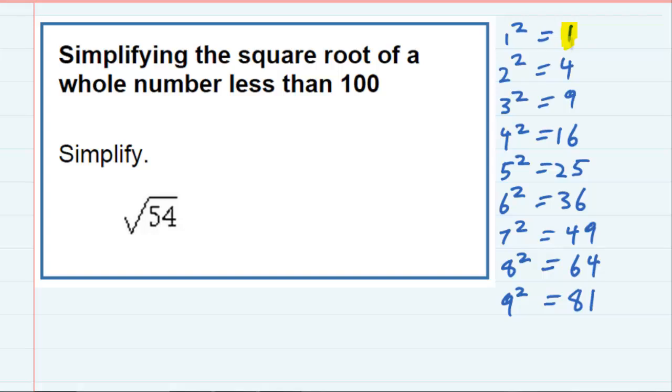So if we were asked to simplify the square root of one of these numbers, we should be able to do that. Square root of 36 is 6, square root of 49 is 7, and so on. But we're asked to find the square root of 54, and that's not one of these numbers over on the right-hand side, so it's not a perfect square itself.